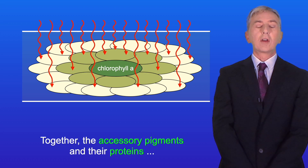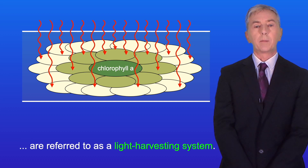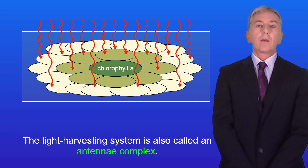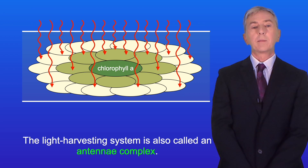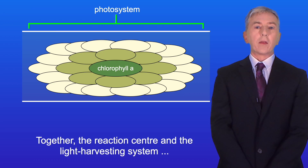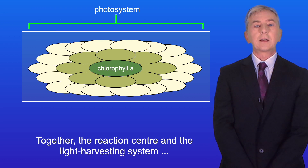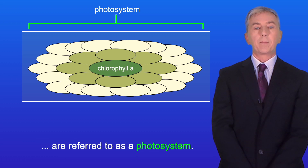Together the accessory pigments and their proteins are referred to as a light harvesting system. The light harvesting system is also called an antenna complex. Together the reaction center and the light harvesting system are referred to as a photosystem.